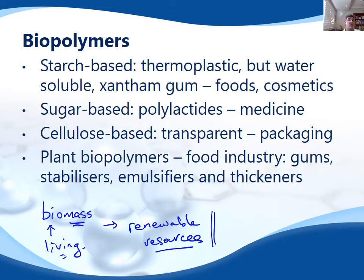Some of the starch-based biopolymers include things like thermoplastic, water-soluble xanthan gums, and those used in food and cosmetics. Some of the sugar-based ones are the polylactides, and I'll have a look at one of those just very briefly in an upcoming slide. These are used for packaging, and there are also some different types of plant biopolymers primarily used in the food industry as gums, stabilizers, emulsifiers, and thickeners.